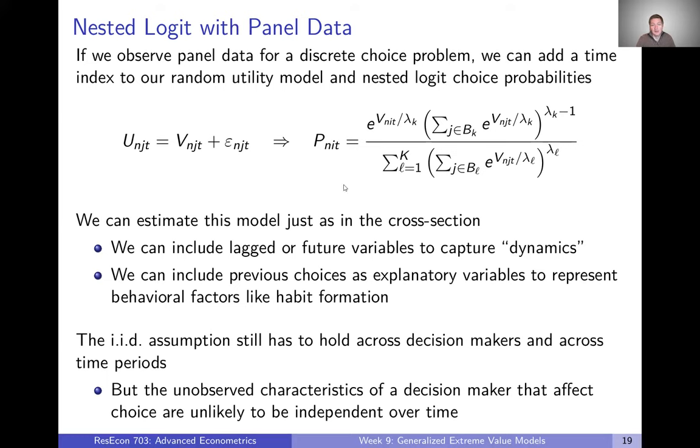We're just going to be thinking about not just having a choice probability for a decision maker for a particular alternative, but it will also be for a particular point in time. And the thought here is that if the attributes are changing over time, then they might make different choices at different periods of time. And so as those attributes change, we might end up with different probabilities today versus tomorrow versus the next day. Whether I choose to bike to work or not is going to depend on whether it's raining today or not, for example.